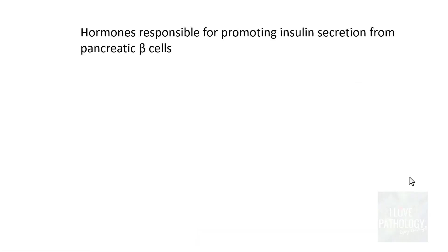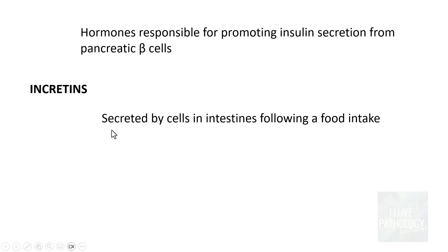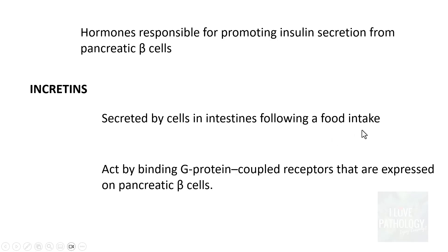Now, are there any hormones responsible for promoting insulin secretion from the pancreatic beta cells? Yes — they are known as incretins. Incretins are hormones responsible for promoting insulin secretion from beta cells. They are secreted by cells of the intestine after food intake.